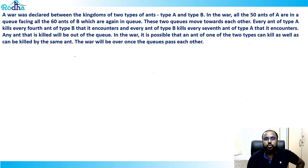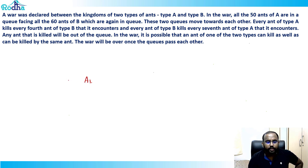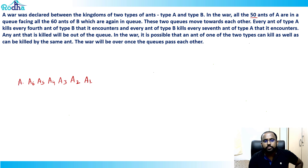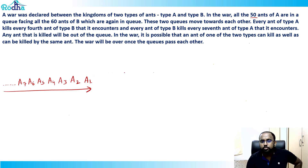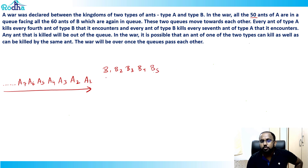Let's visualize this. Here is row A moving in one direction — a1, a2, a3, a4, a5, a6, a7, and so on — with 50 ants total. Similarly, there are the type B ants — b1, b2, b3, b4, b5, and so on — moving in the opposite direction.